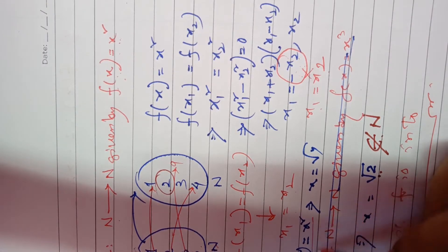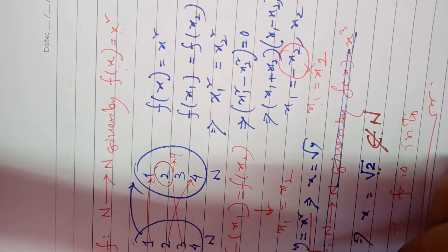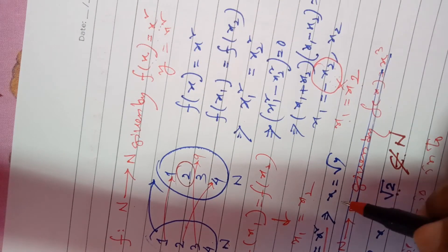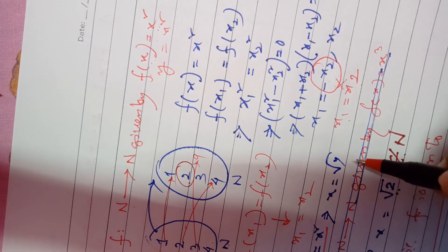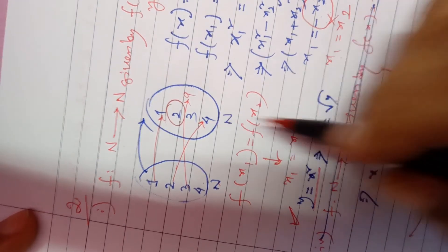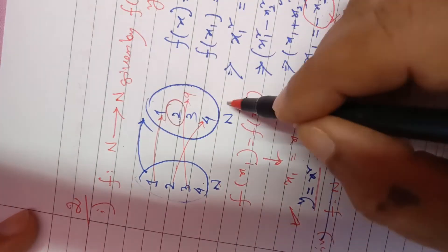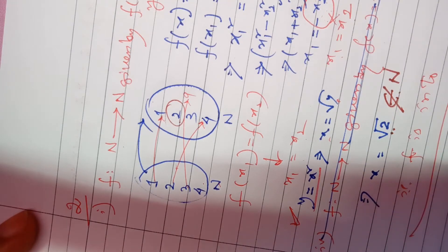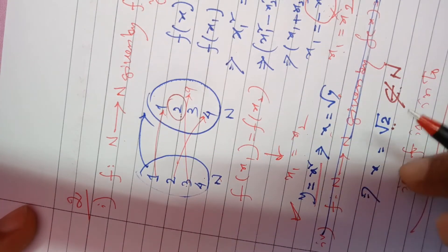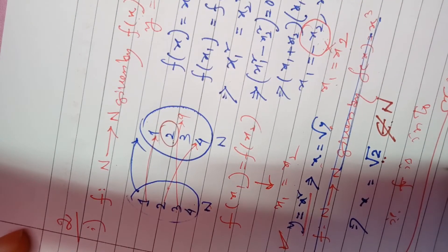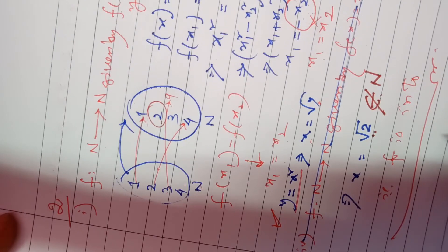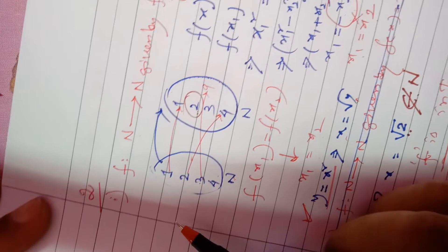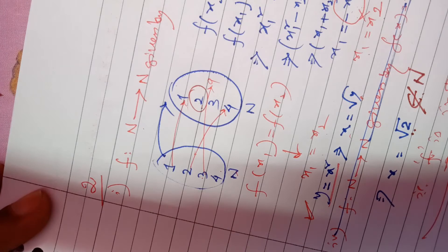The trick to check onto or into: take the function y = x², express x in terms of y, so x = √y. Pick a value of y from the co-domain — say y = 2 — then x = √2, which does not belong to N. So many elements in the co-domain have no pre-image in the domain, therefore the function is not onto. To summarize: this function is one-one but into.